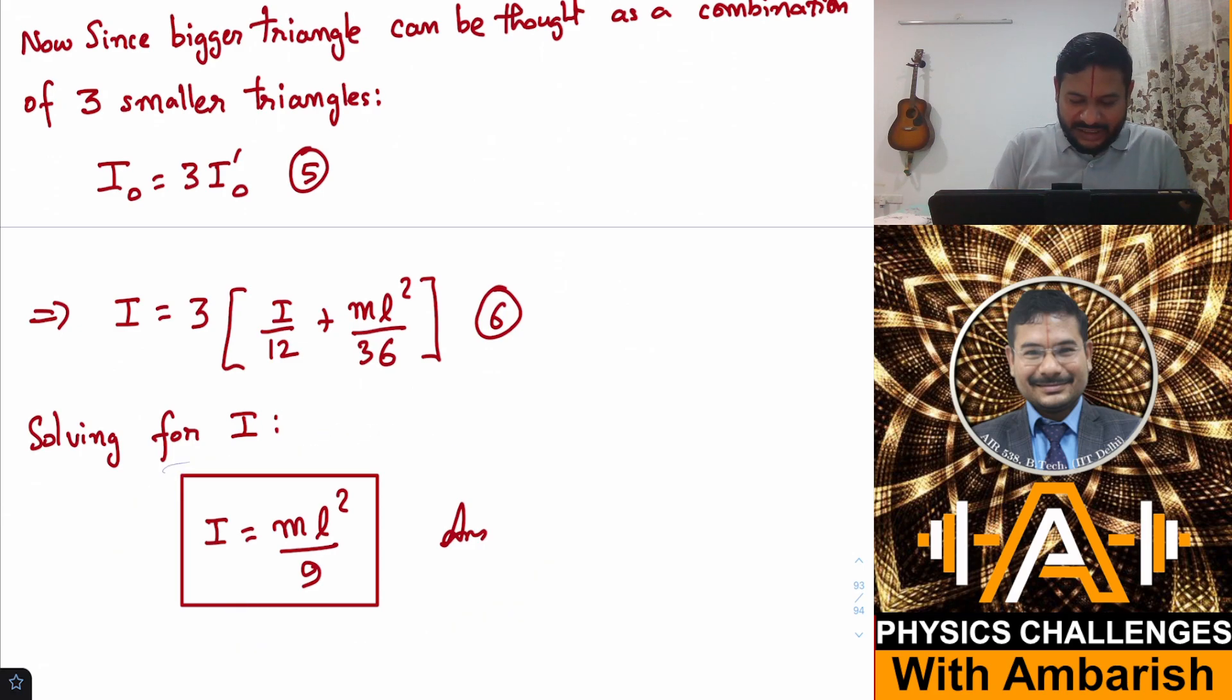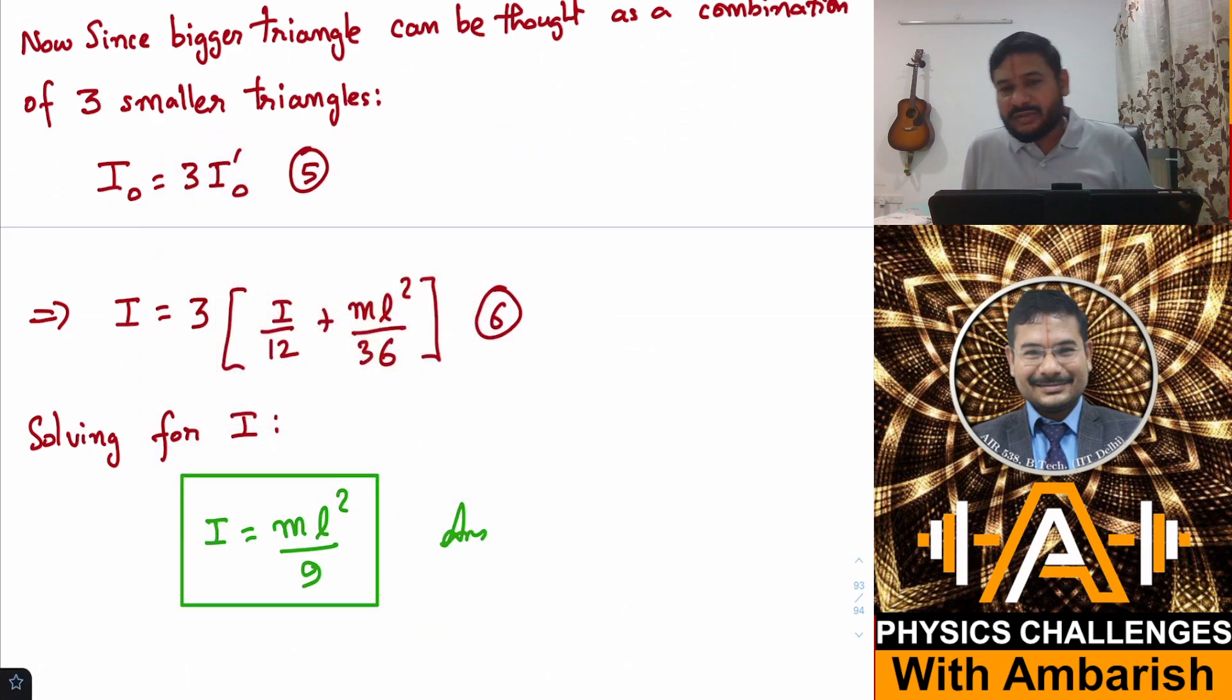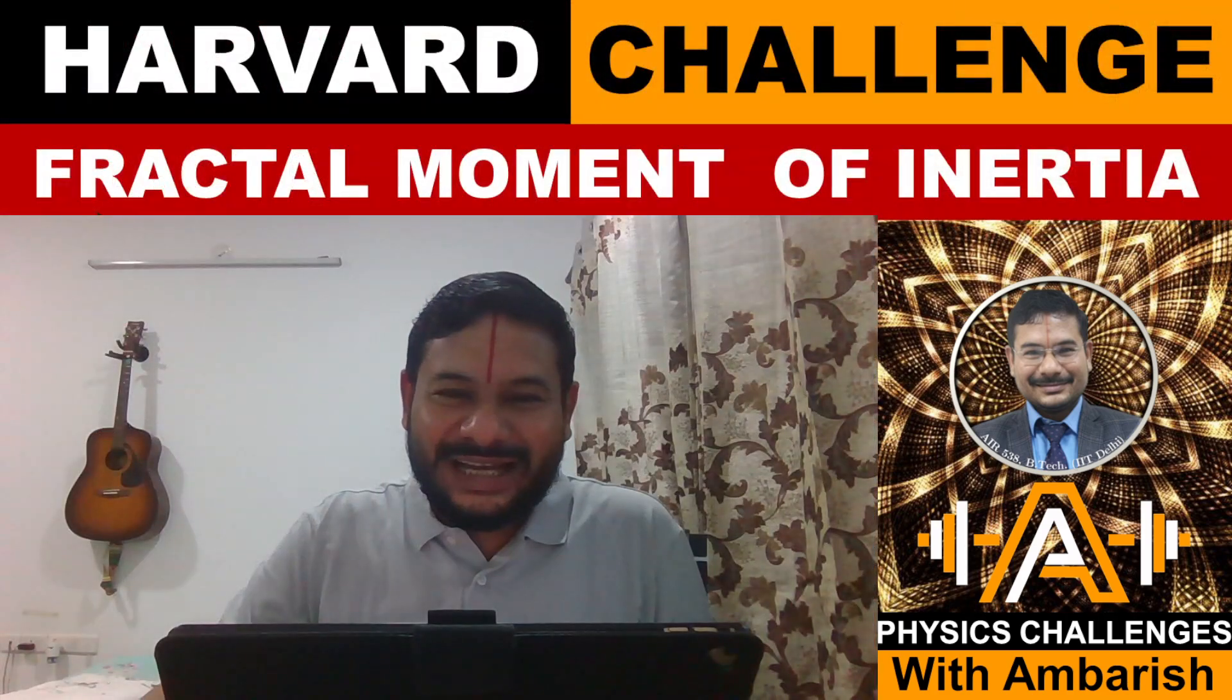This is the moment of inertia. You can do a similar kind of problem for a fractal square or maybe a fractal line or a fractal cube. You can apply the same idea to different geometries.